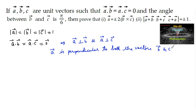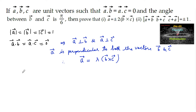Since a is perpendicular to both b and c, we can express vector a as equal to some scalar λ times (b×c). The angle between b and c is given as π/6. So let us consider the modulus of b×c.